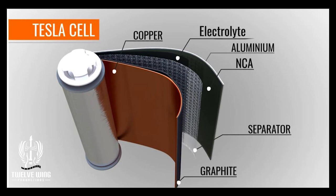Here is a Tesla cell. On one side you've got a copper foil that's covered in graphite. On the opposite side you have a piece of aluminum foil that is covered with NCA. What is NCA? NCA stands for Nickel Cobalt Aluminum. It's an oxide layer that's applied to the aluminum in the form of a paint.